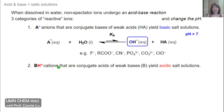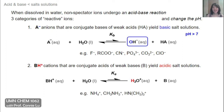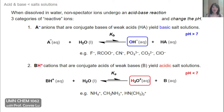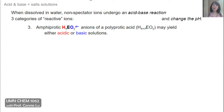The second category is cations BH+, which represent the conjugate acids of weak bases. Like any weak acids, these can dissociate in water to form hydronium ion and release the neutral base. These should be recognizable as the protonated forms of weak bases such as ammonia or amines — these are their conjugate acids. These solutions become acidic because they form the hydronium ion, and the pH of their solutions will be less than 7.